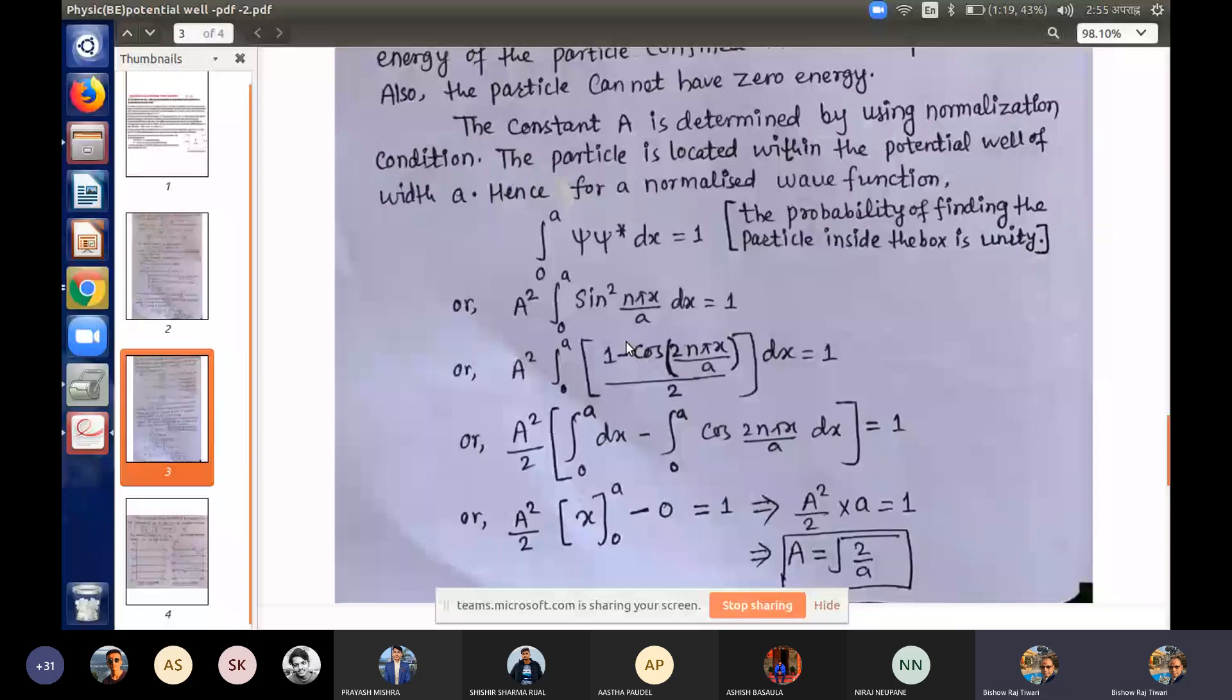This formula is: 1 minus cos 2n pi x upon A all over 2. The limit of the first term is 0 to a dx and the second term, the integral evaluates properly. The second term is equal to dx.